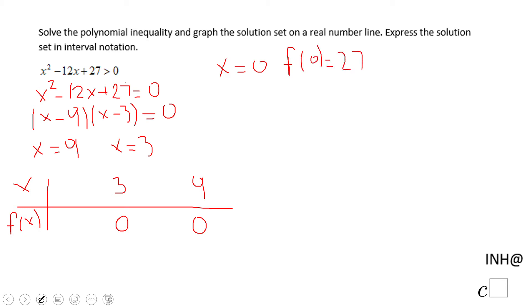You plug in zero and you get 27. It's a positive value. That's why I'm going to put plus here, with zero being to the left of three.